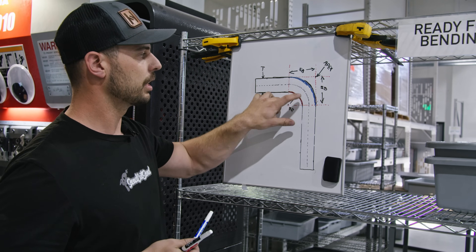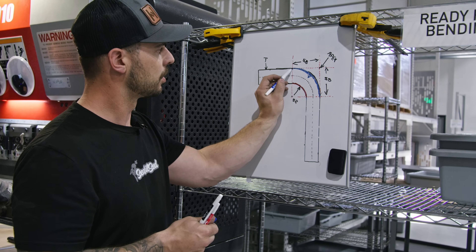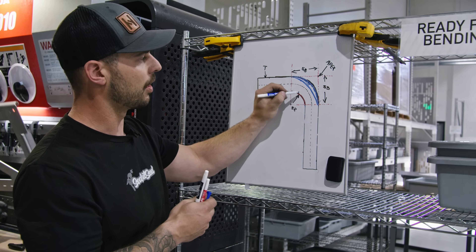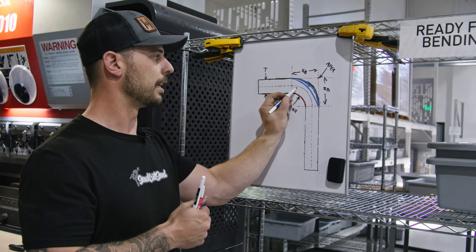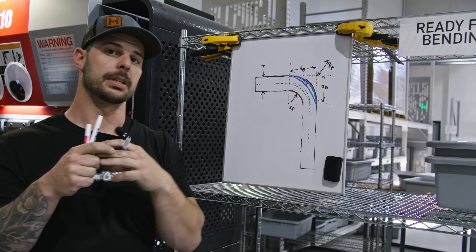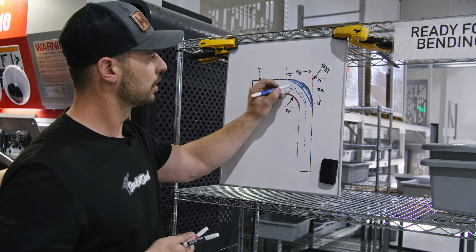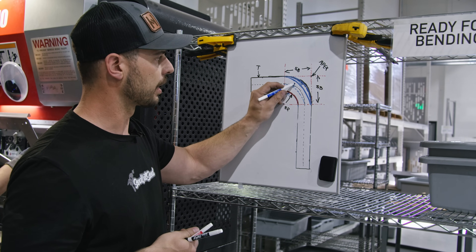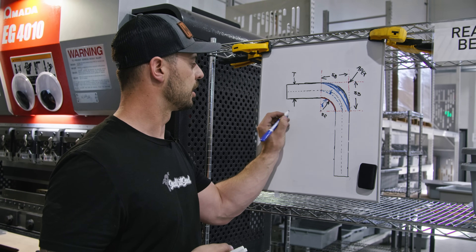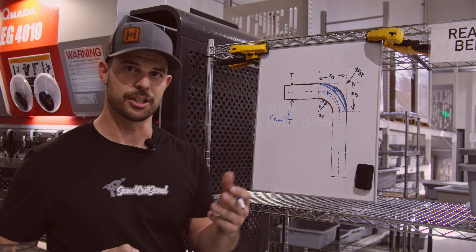When we bend the part, we deform this area and it moves inward. To exaggerate this: stretching that inside causes thinning in this area, which causes our neutral line to shift inwards as well. This shift inward and that thinning is where we get our term K factor from. The K factor equals the reduced thickness — little t — over the overall thickness T. That's it for basic bending terminology — stay tuned for more.